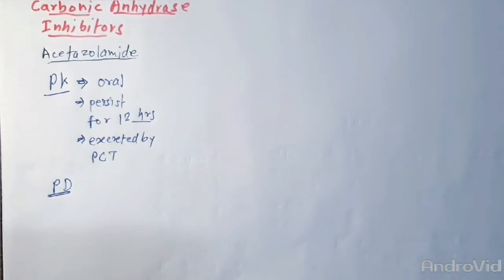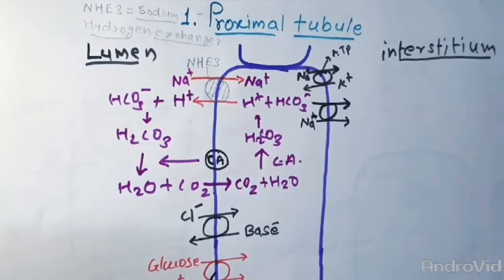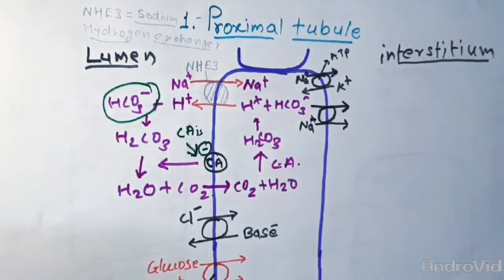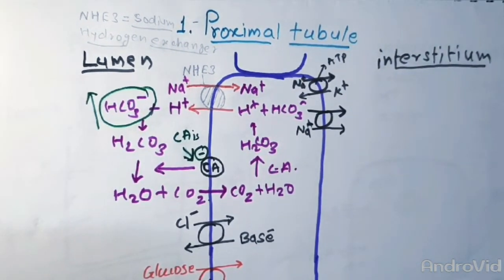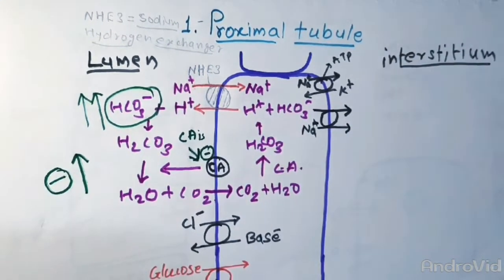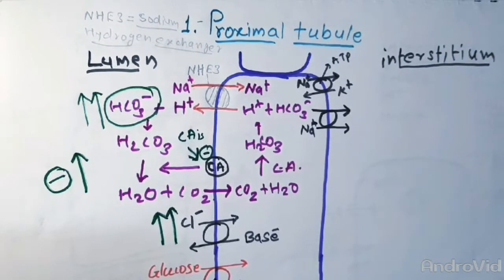Talking about pharmacodynamics, it depresses the bicarbonate ion reabsorption in the PCT, that is here. So this will not be reabsorbed, it will accumulate in the lumen which will increase the negative charge inside the lumen. To compensate this, chloride ion reabsorption will be increased.